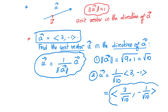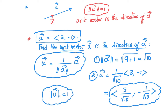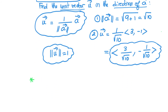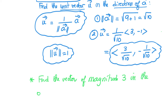That is the unit vector in the direction of a. We can check that if we find the magnitude of u, it will give us exactly 1. Occasionally we are not interested in vectors of magnitude 1, but of a given magnitude — for example, finding the vector of magnitude 3 in the direction of a given vector a.